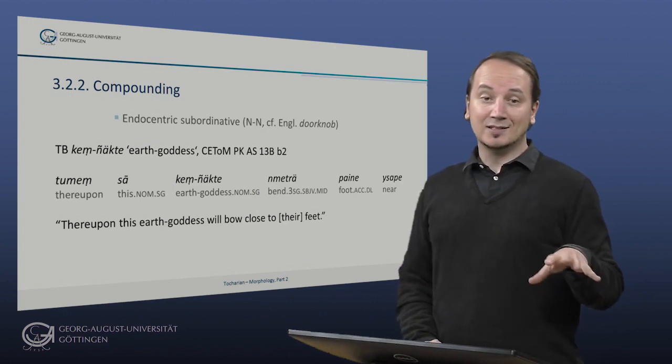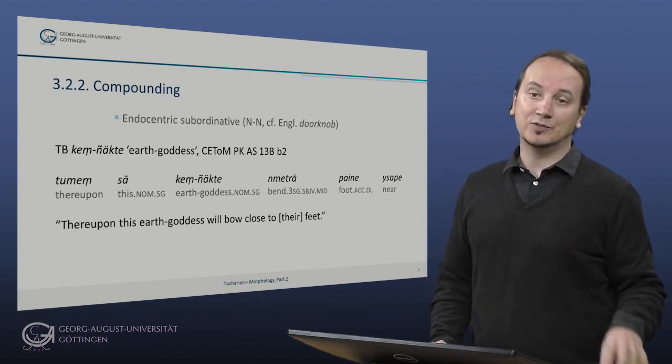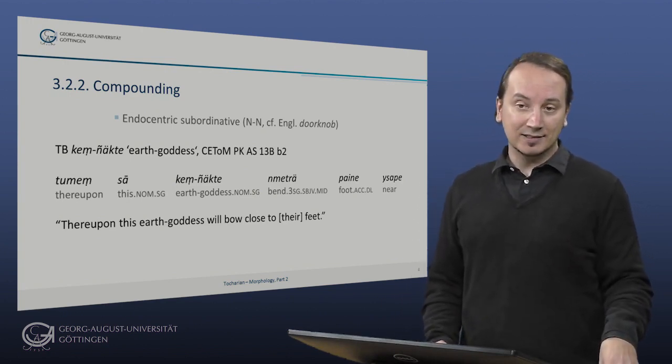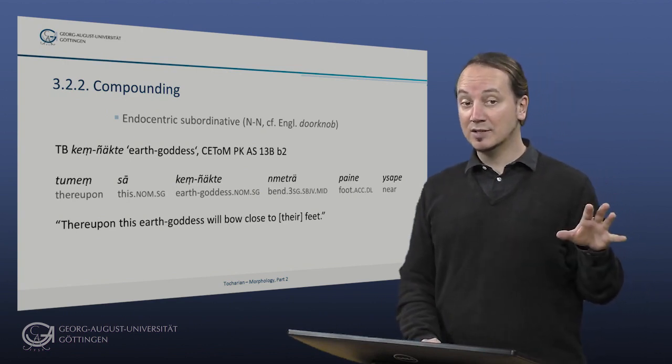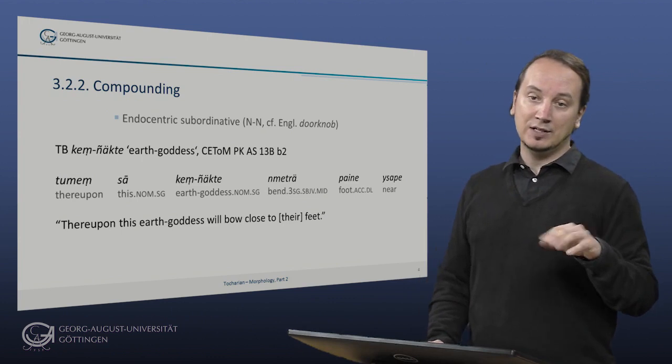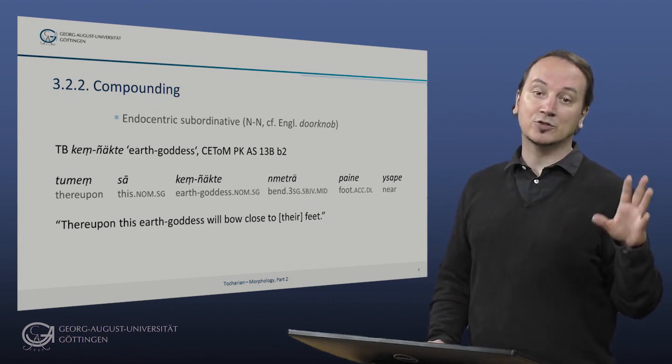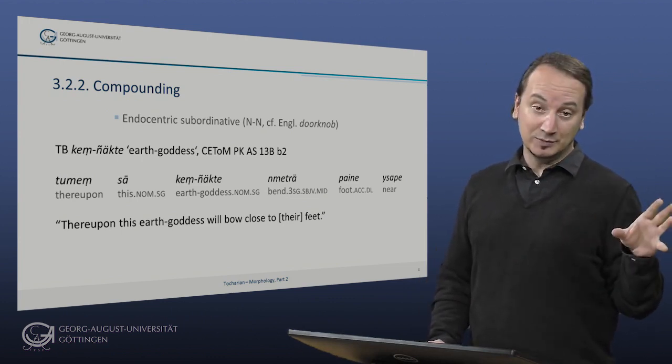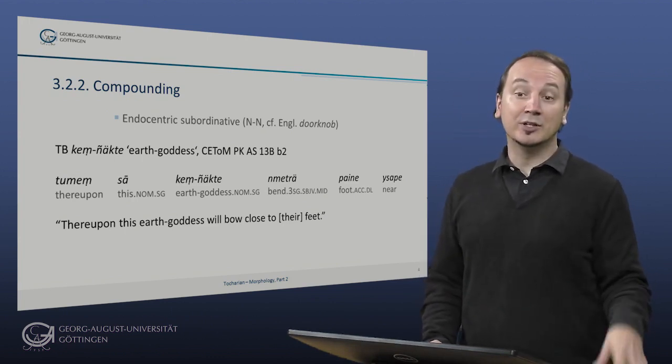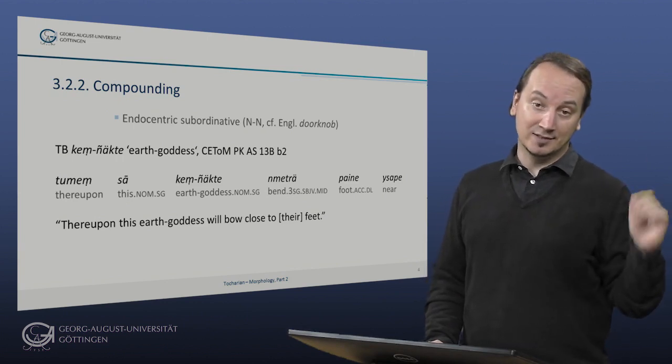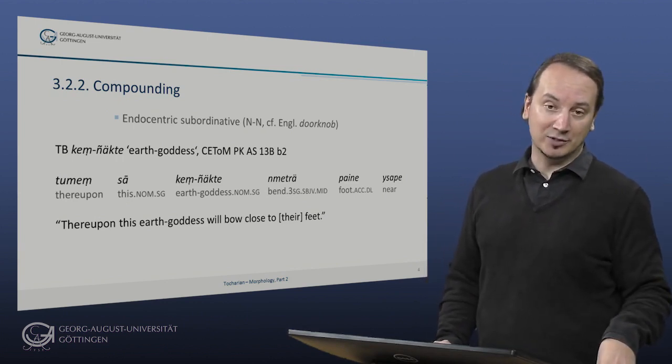Kenyukte is indeed a compound, since the simplex of the word for god is Nyakte in Tocharian B. And this means that the stress has shifted because it is part of a compound. In this particular case, the stress shifted to the first syllable in accordance with our second amendment of the stress rule in Tocharian B, namely that full vowels attract the stress also in trisyllabic words.